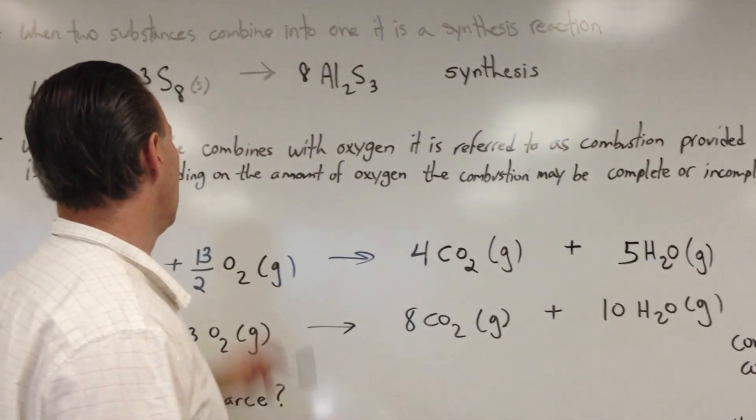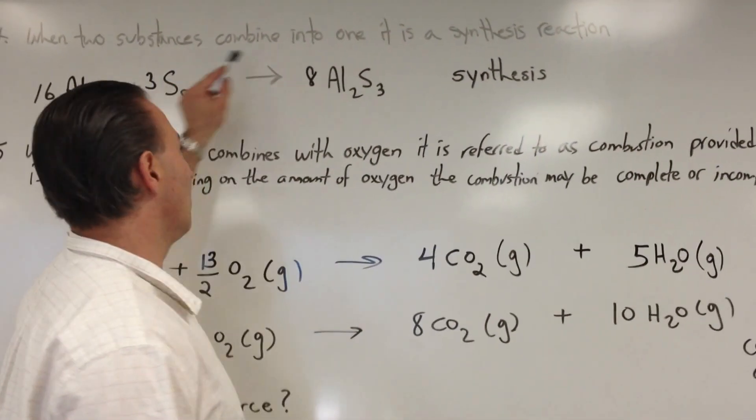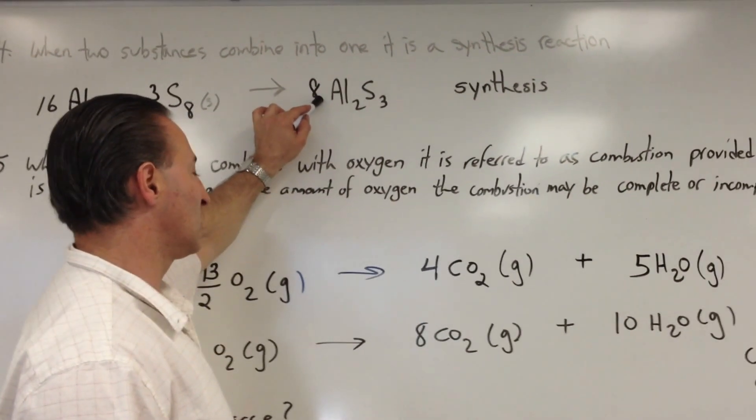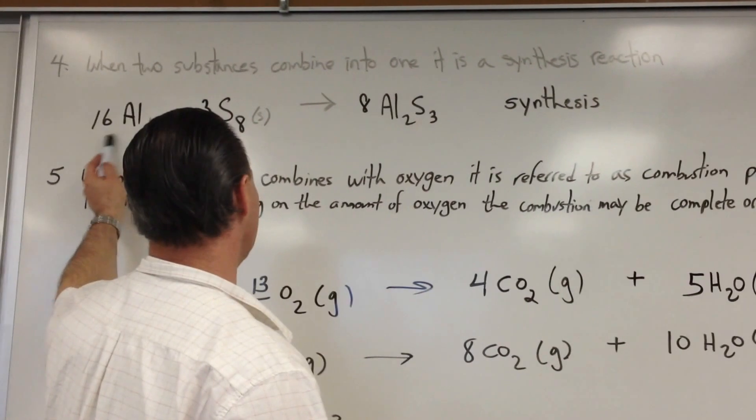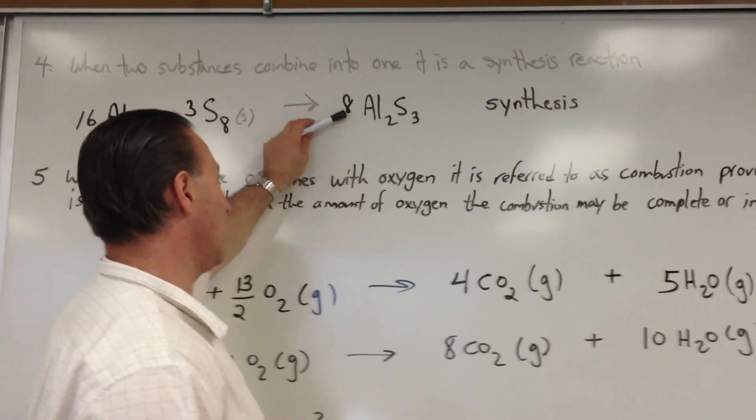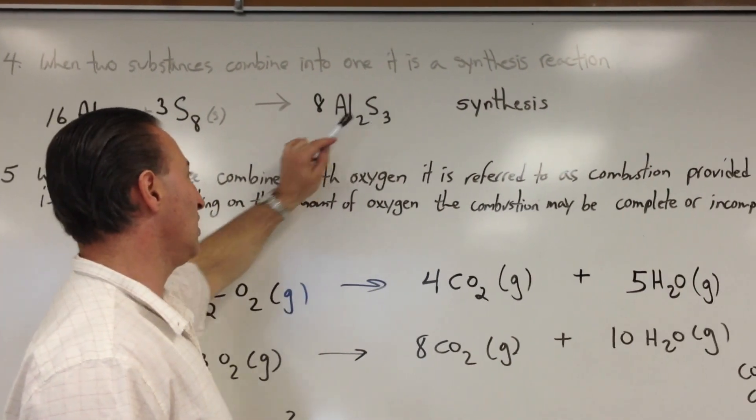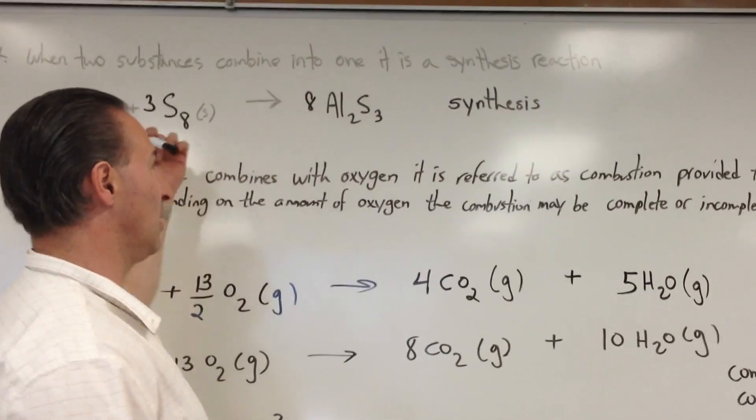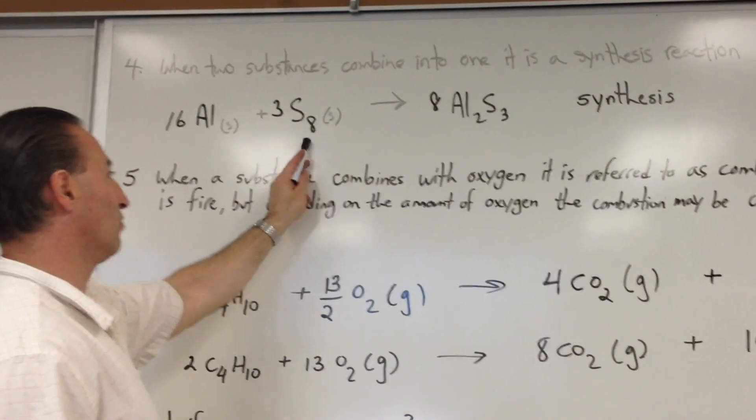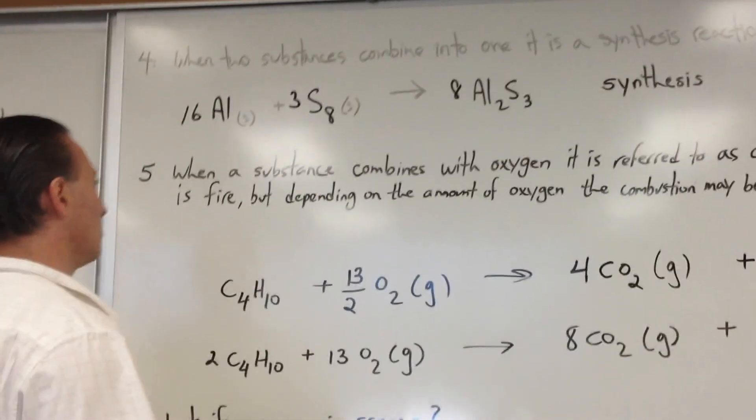Well, write a three in front of the S8 and write an eight in front of the S3. You'll have 24 sulfur atoms. And then you can balance the 16 aluminum atoms that will result. Because by writing eight in front of Al2S3, you're going to need 24 sulfurs and 16 aluminums to balance it on the other side. So here we have 24 sulfur atoms and 16 aluminum atoms.